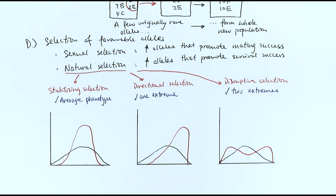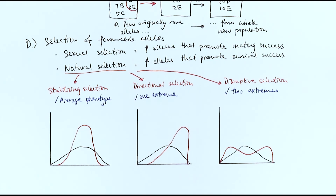A quick recap on selection of favorable alleles: selection is about how favorable alleles are selected. In the case of natural selection there are three types — stabilizing selection where the average phenotype is selected, directional selection where one extreme is selected, and disruptive selection where both extremes are selected.